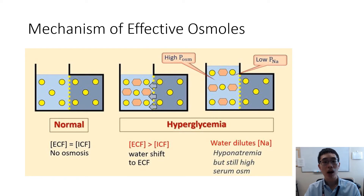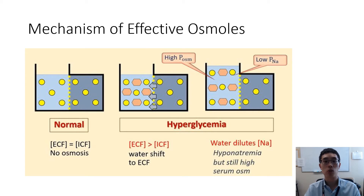Now what about high osmolality hyponatremia where the serum osmolality rises above 300? This is usually when you have something called an effective osmol that drives a water shift into the serum component. In this case, sugars such as glucose and mannitol are the typical offenders that result in hyperosmolar hyponatremia.